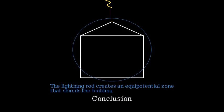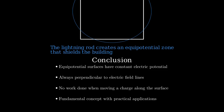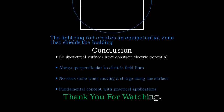To summarize what we've learned about equipotential surfaces: they are surfaces where the electric potential is constant, they are always perpendicular to electric field lines, and no work is done when moving a charge along an equipotential surface. Understanding equipotential surfaces helps us visualize electric fields and design electrical systems. This concept is fundamental in electrostatics and has numerous practical applications. Thank you for watching, and I hope you now have a clear understanding of equipotential surfaces.